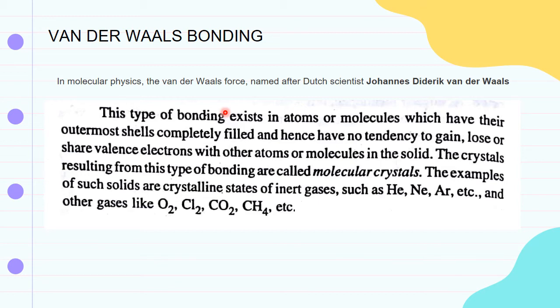This type of bonding exists in atoms or molecules which have their outermost shells completely filled, and hence they have no tendency to gain, lose, or share valence electrons with other atoms. The crystals resulting from this type of bonding are called molecular crystals.